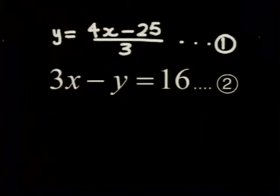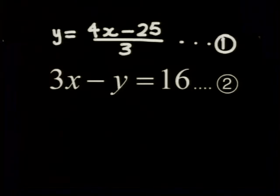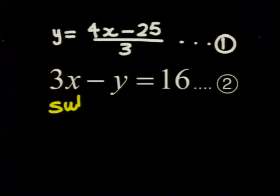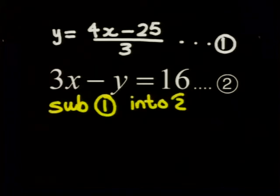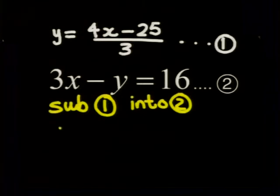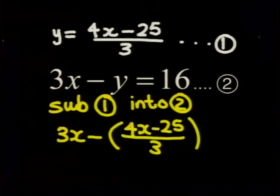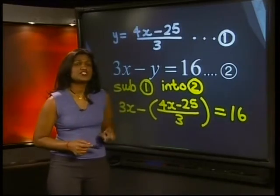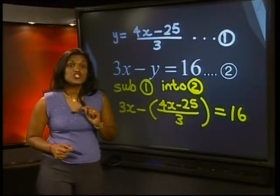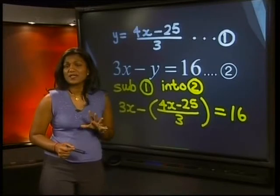If the question had something like this for y, it would become really tricky to solve. If we substitute equation 1 into equation 2, we get 3x minus (4x minus 25) all divided by 3 is equal to 16. Now even this equation is not really difficult, but it does show that the method we're using can sometimes become a problem.